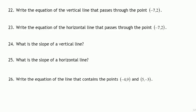Write the equation of the vertical line that passes through the point negative 7, 2. A vertical line — let me show you over here — we have the x-axis and y-axis. The y-axis has equation x equals 0. Our line is vertical, so it will be somewhere to the right or left; in fact, negative 7, 2 means it passes through here.